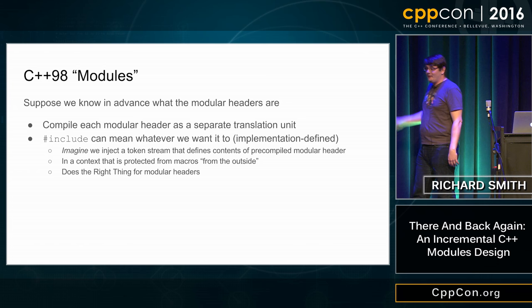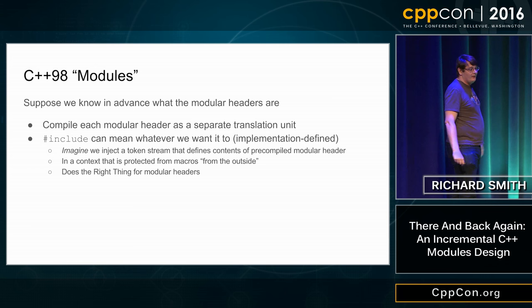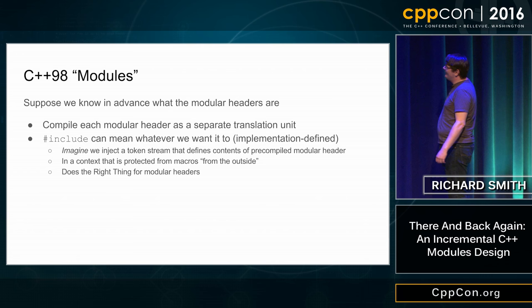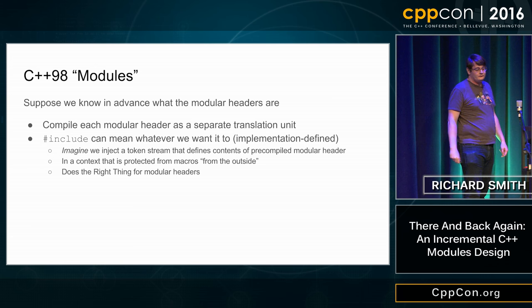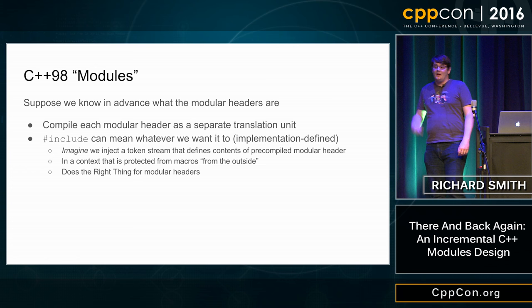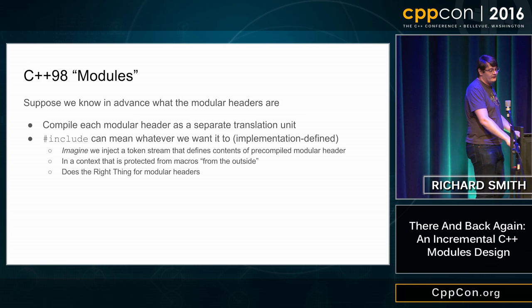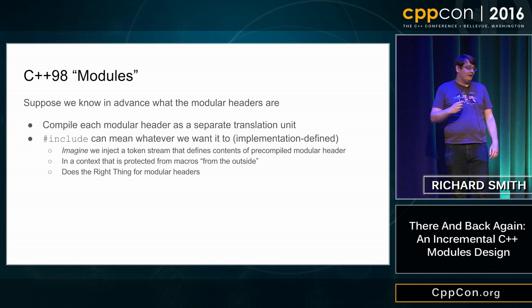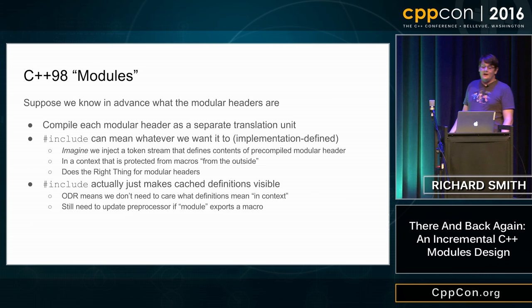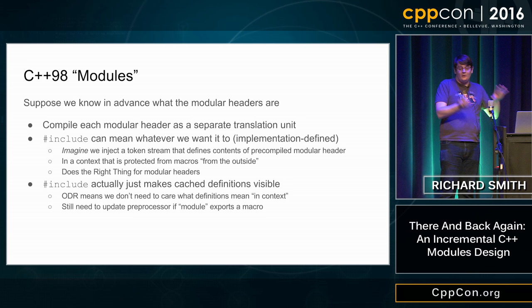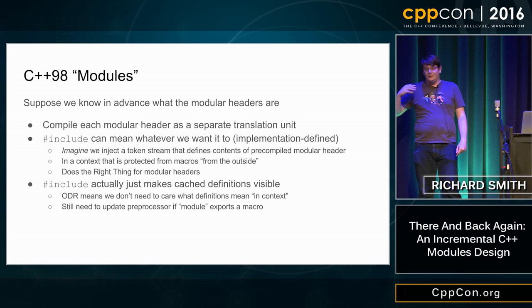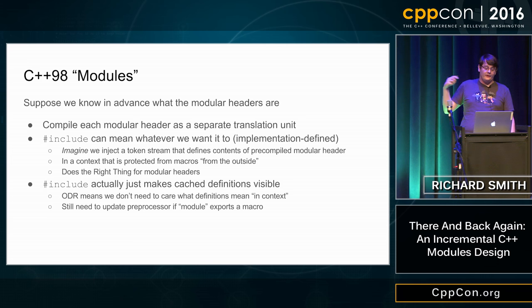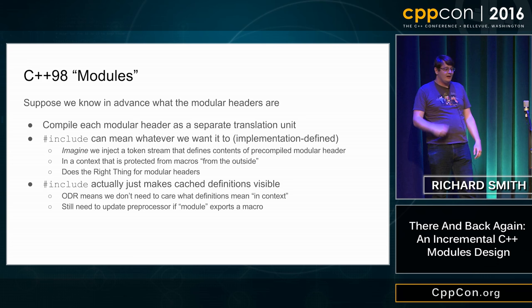If your header was modular — if you actually wrote a normal sane header — then this does the same thing your program already did. Or if it does something different, it's because you avoided a bug where some macro or declaration beforehand was changing the meaning in a way you didn't intend. Because we have control over what is injected, we can implement it differently: when we compile the header, we cache what those declarations, definitions, macros were, and instead of any recompilation, just make them visible. Because of the ODR, we don't need to care that they might have meant something slightly different in different contexts.